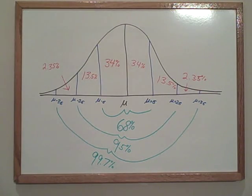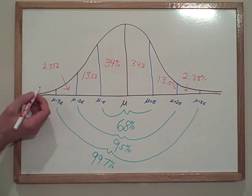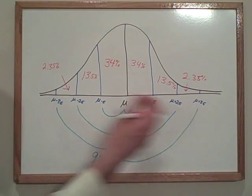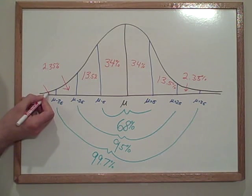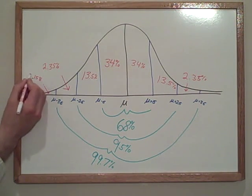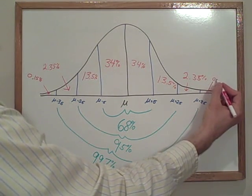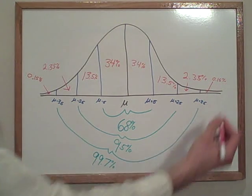Now if you want to get technical, we can go even further with it and we can keep going out several more standard deviations, but it's going to get really technical. So anything beyond three standard deviations is very small. That is 0.15% here and 0.15% here.